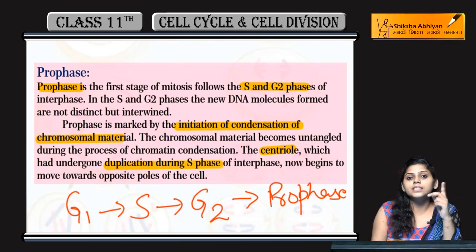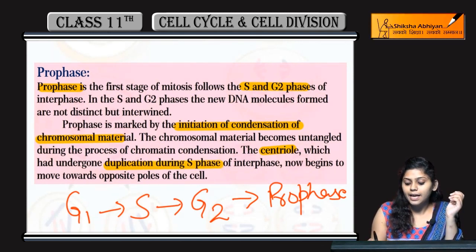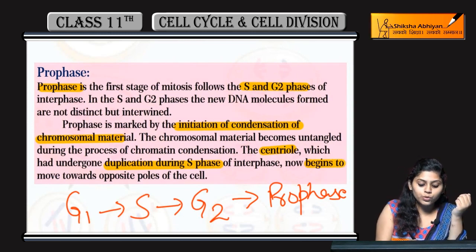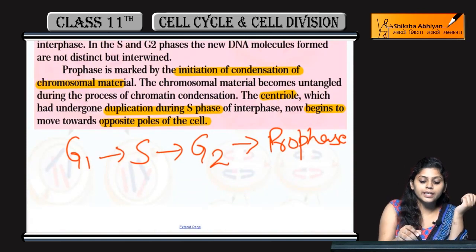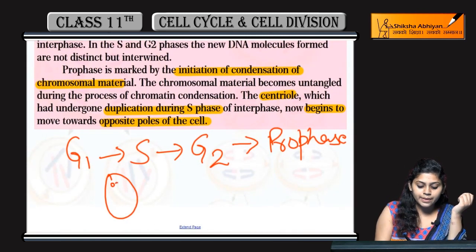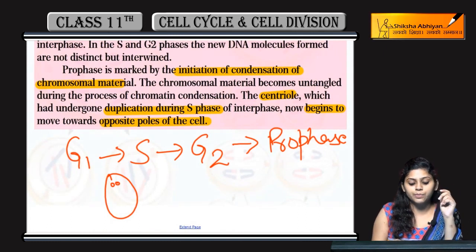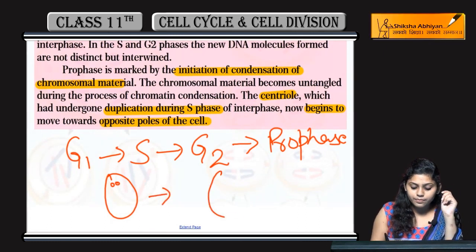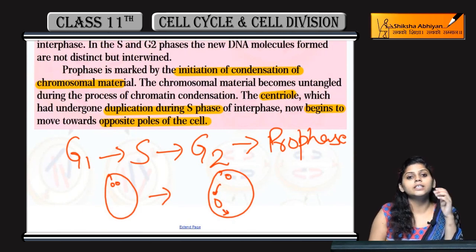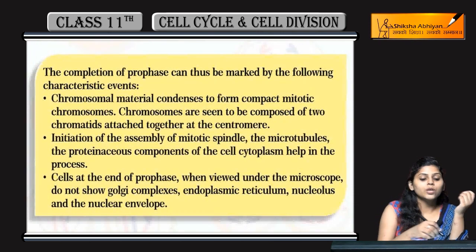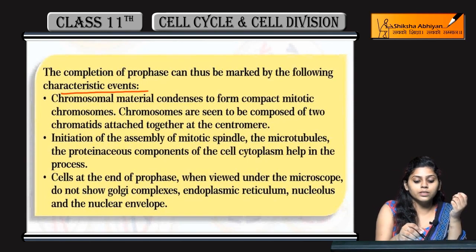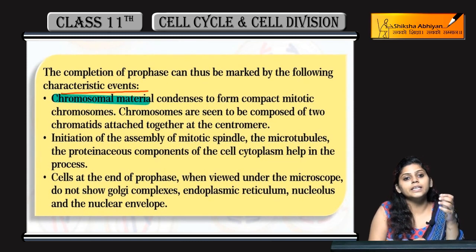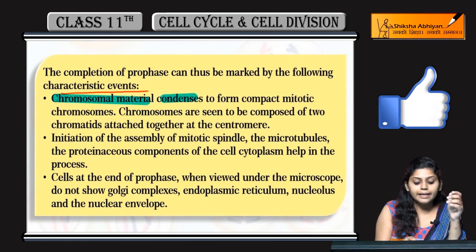During S phase — synthesis phase of interphase — and pro phase me aa ke, they begin to move towards the opposite poles of the cell. Agar ek cell hai, uske ek side me centrioles present hai pair me, then woh move karna shuru ho jate hai towards the other pole. Kuch characteristic events hai pro phase ke: jo chromosomal material hai woh condense kerta hai.